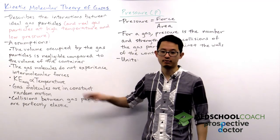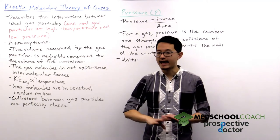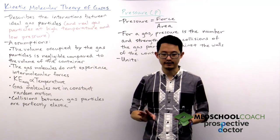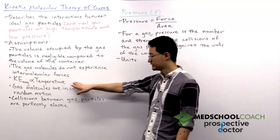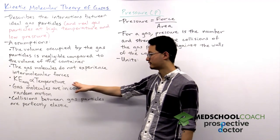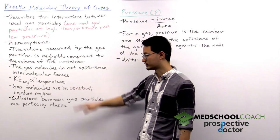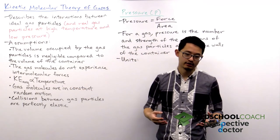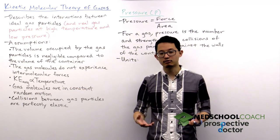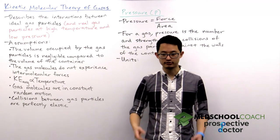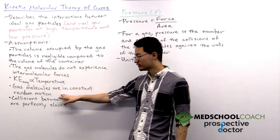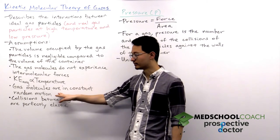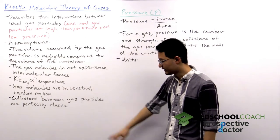Our third assumption: the average kinetic energy of the molecules is directly proportional to temperature. So essentially if you double the temperature, you double the kinetic energy of your molecules. Our fourth assumption is gas molecules are in constant random motion. And our fifth assumption is collisions between gas particles are perfectly elastic.